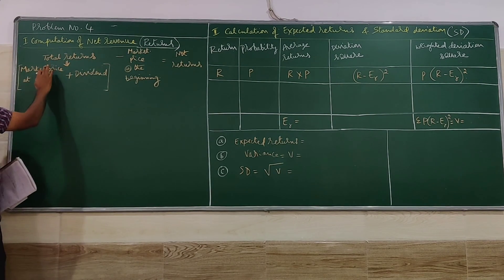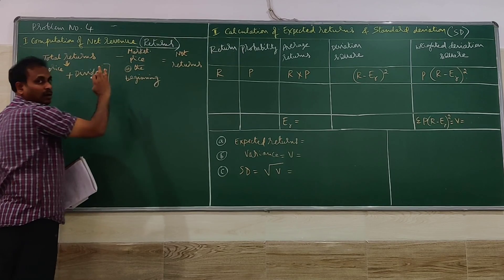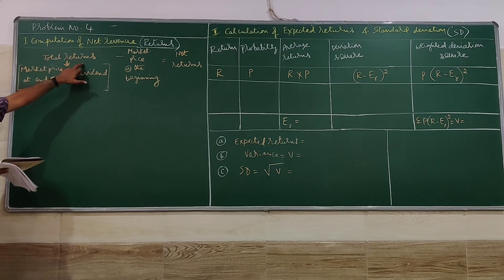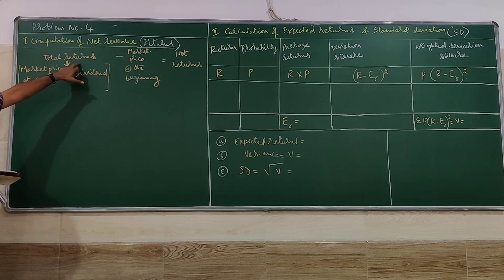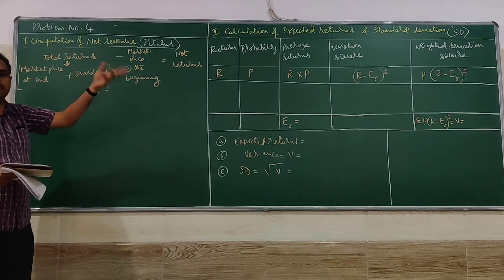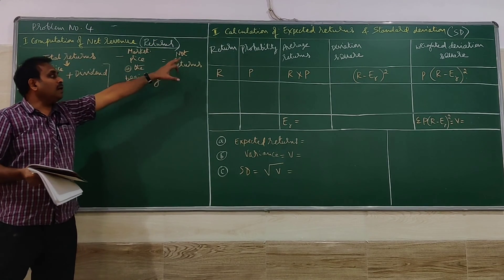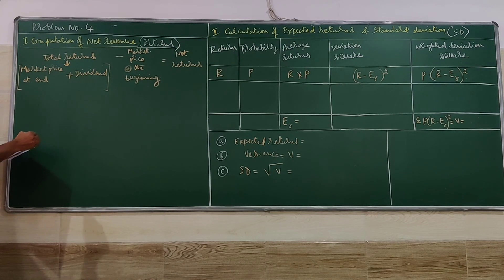The formula for net returns goes like this: total returns minus market price at the beginning of the year equals net returns. Total returns have two parts: market price at the end of the year plus dividend. So: (Market Price End + Dividend) − Market Price Beginning = Net Returns. This is the value we will use for further calculations.